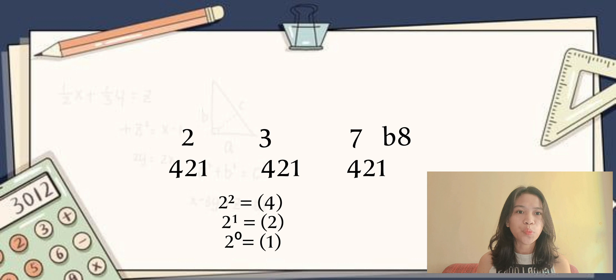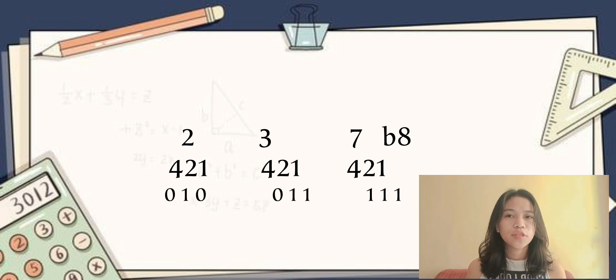So we have 0, 1, 0; 0, 1, 1; and 1, 1, 1. This represents as hexadecimal.